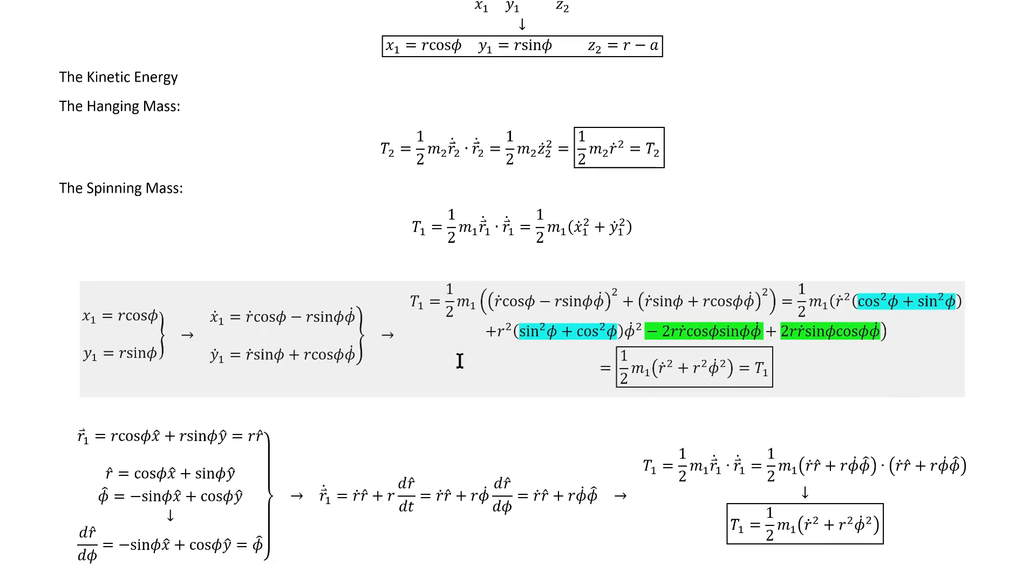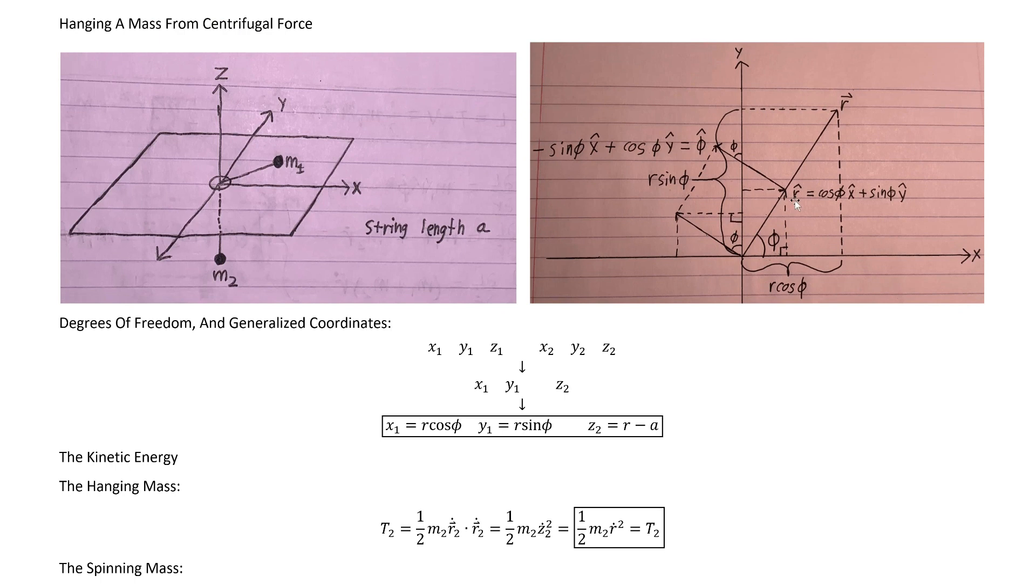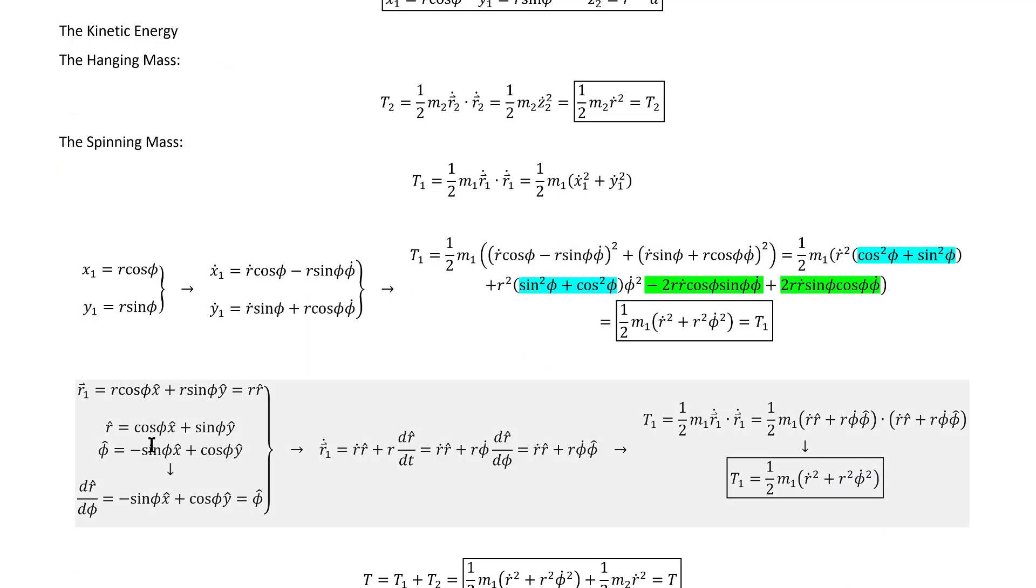Another interesting thing we can do, we can look back up here and work out what R hat and phi hat are, using similar trigonometry to how we found the component expressions for R vector here. That gets us these two expressions, and we already have the components for the R1 vector from earlier.